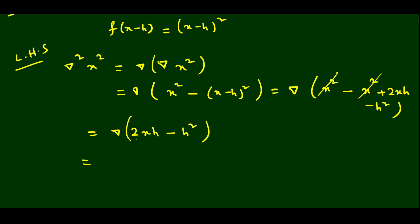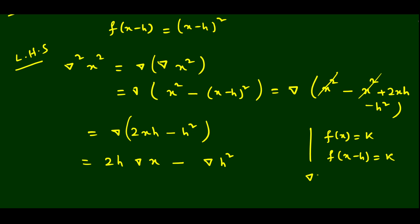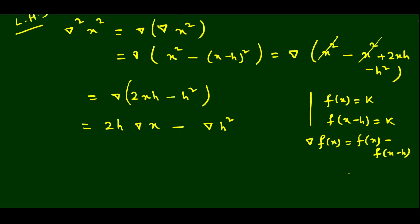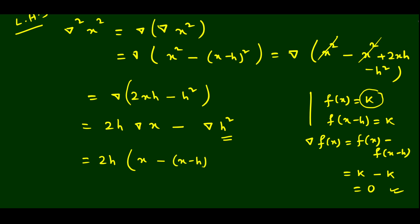If f(x) is a constant, then f(x−h) is the same constant, so nabla of a constant = 0. Since h² is constant, nabla(h²) = 0. For nabla(x) = x − (x−h) = h. Therefore nabla² x² = 2h · h − 0 = 2h².